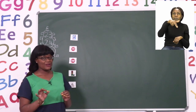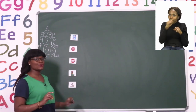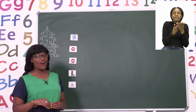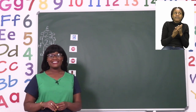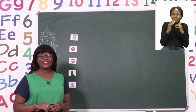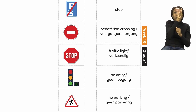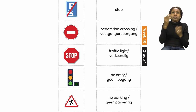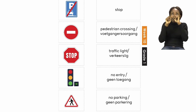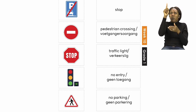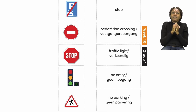Now you are going to match the road signs to the boxes on your page. Each box has a different instruction and you need to match with your pencil from the road sign to the actual instruction. The first box says stop. Which road sign matches the box? I'd like you to please draw a line. Well done.